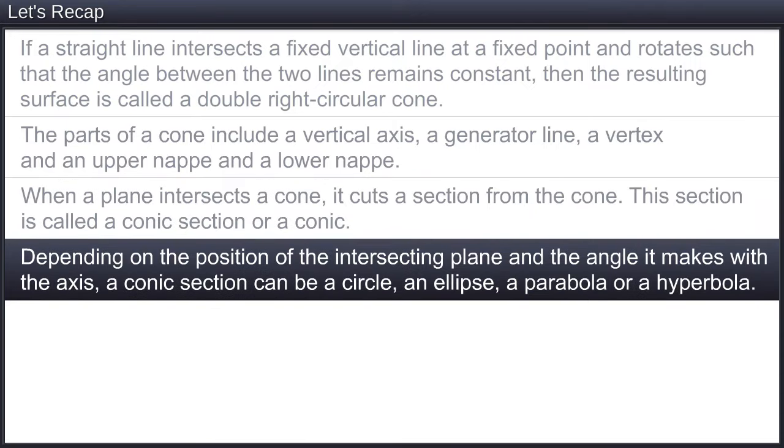Depending on the position of the intersecting plane and the angle it makes with the axis, a conic section can be a circle, an ellipse, a parabola, or a hyperbola.